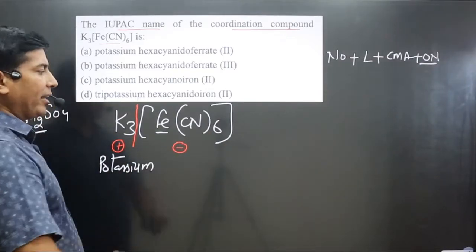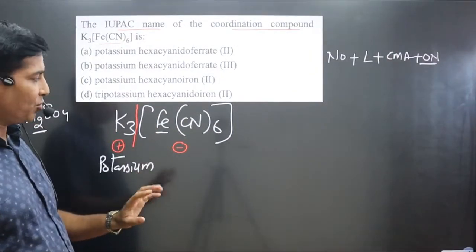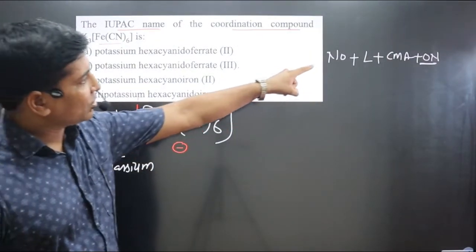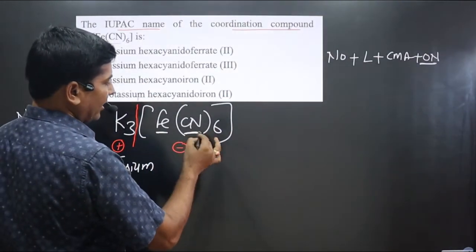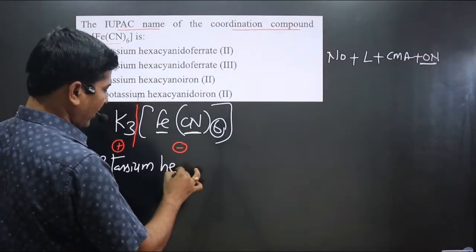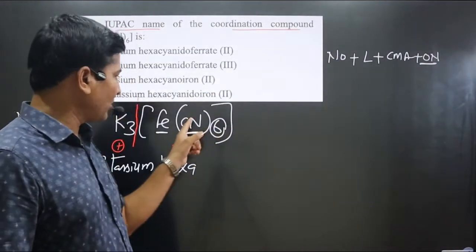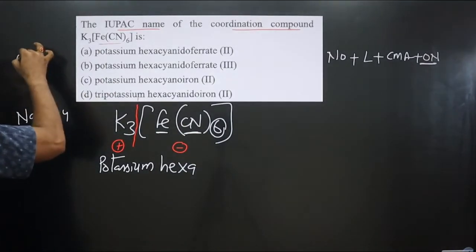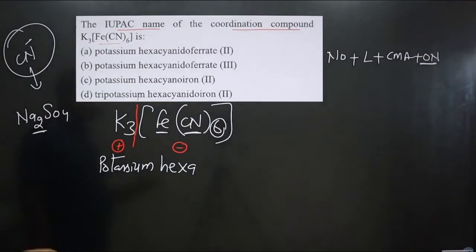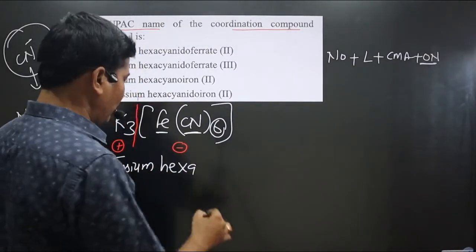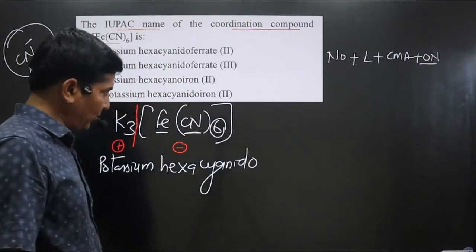Cationic naming is done. Now we move to the anionic portion. In this anionic complex, the central metal atom is iron and there are six ligands, so we write hexa. The ligand is the cyanide ion, which is a negative ligand. In IUPAC naming we use cyanido. So we have hexacyanido.